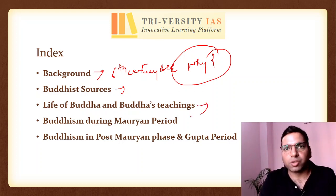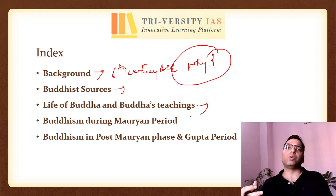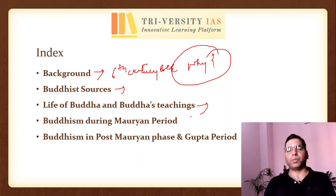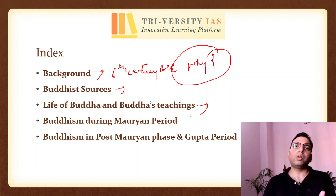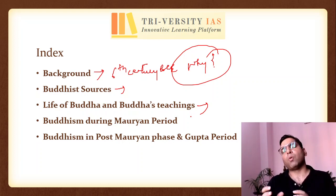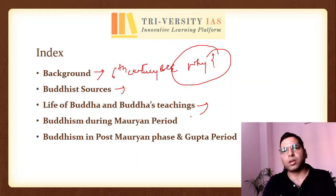Then we will move to the life of Buddha and the teachings of Buddha, covering all the tenets — starting with the Four Noble Truths, then the Eightfold Path and other teachings of Buddhism. Then we will see the evolution of Buddhism: how it evolved from the 6th century BC, the point of its start, till the medieval period, when it almost got wiped out from the land of its origin. It is an irony that Buddhism was almost completely wiped out from the land of its origin. We will see what changes occurred in the teachings and practices of Buddhism.